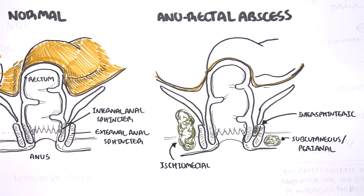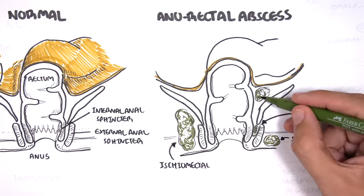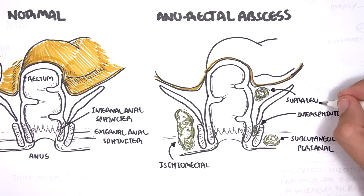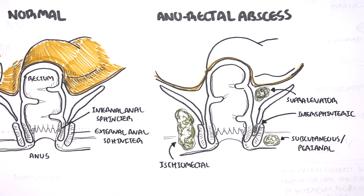Ischiorectal abscesses are large and go from the superficial to the deep. Supralevator abscess, as the name suggests, are abscesses that occur above the levator ani muscle.